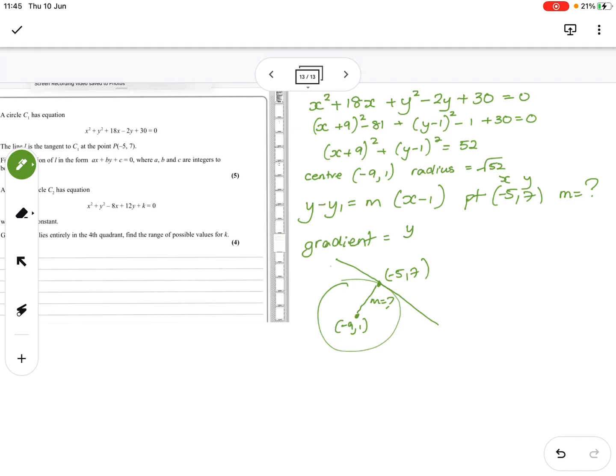So the gradient is y2 minus y1 over x2 minus x1. And again, x, y, x, y. It doesn't matter which way round you do it, so I'm going to do 7 minus 1 over minus 5 minus minus 9 equals 7 minus 1 is 6. Minus 5 plus 9 is 4. So I'm ending up with 3 over 2, positive.